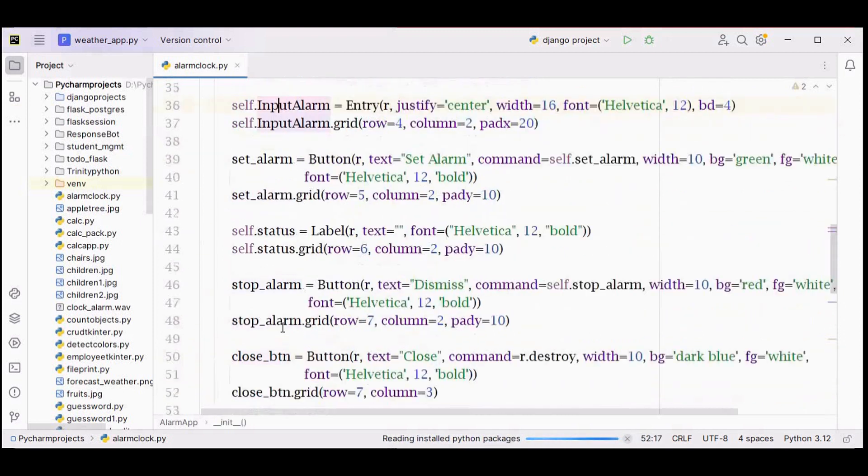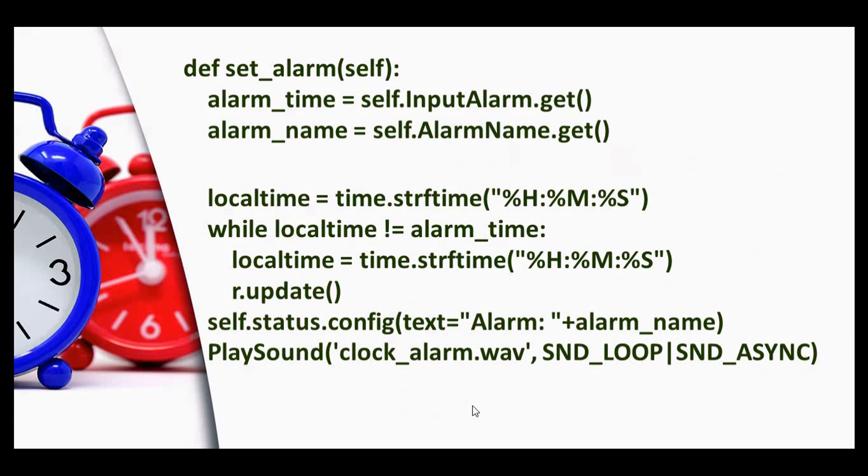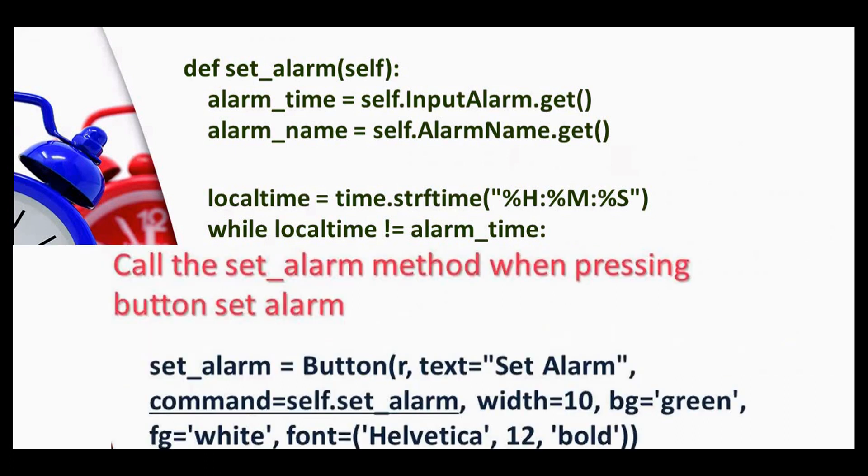Next method is this set alarm method to get the alarm name from the user and also the alarm time from the user using the entry widgets. After this, current local time - we are using strftime function of time module.